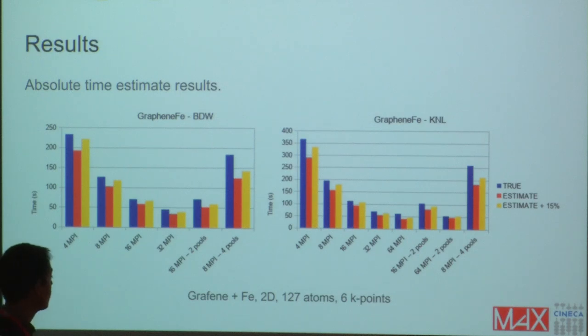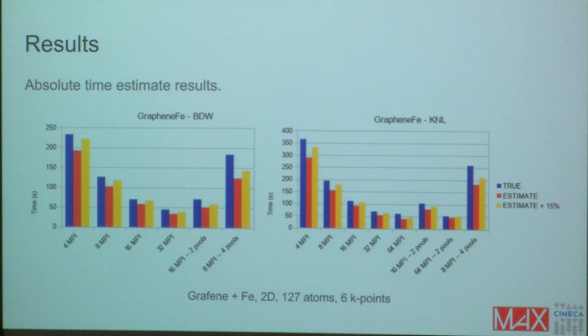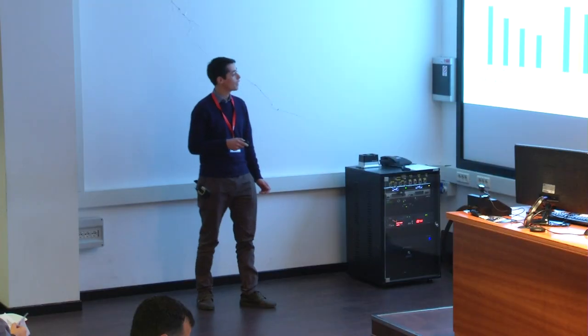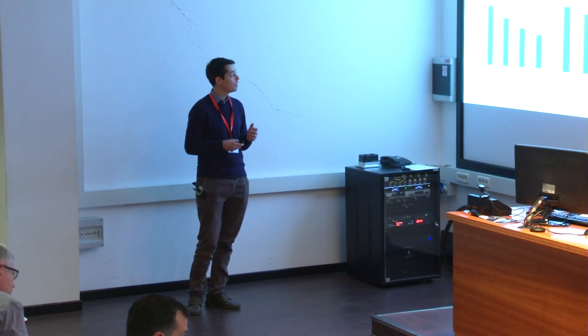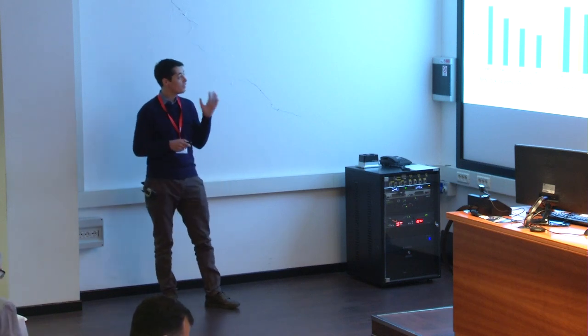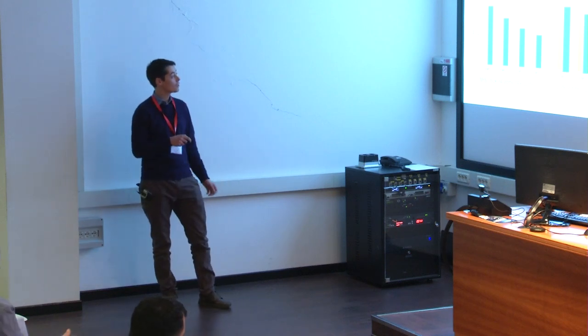Of course, there are situations where the unbalance is not described so accurately. But the nice thing I wanted to show is that for providing information in the context of a co-design, this model already gives important information. Like, for example, the comparison between Broadwell and KNL.